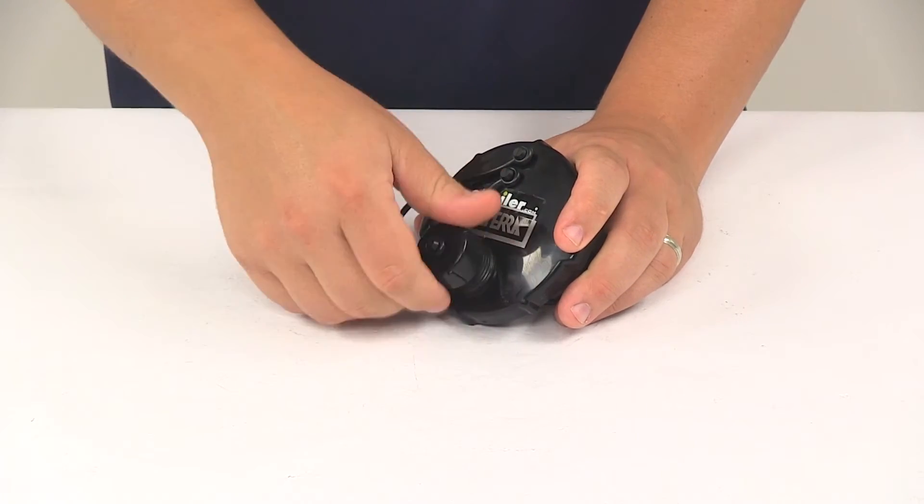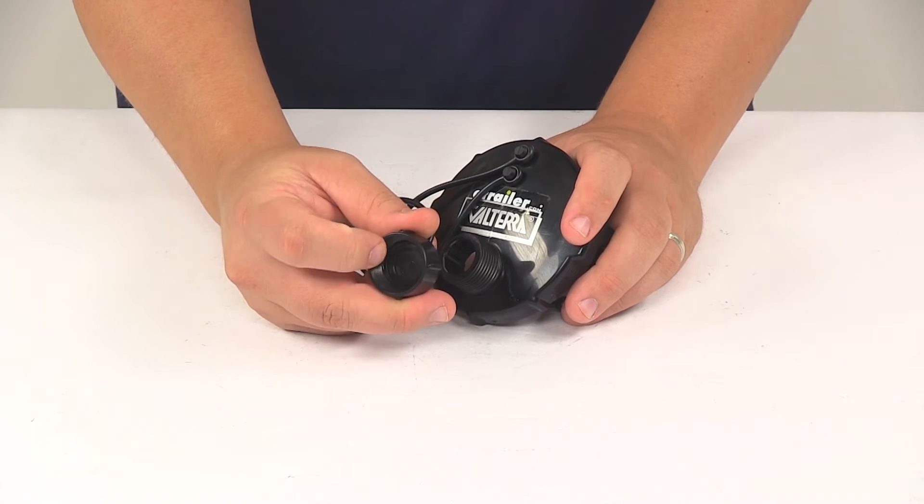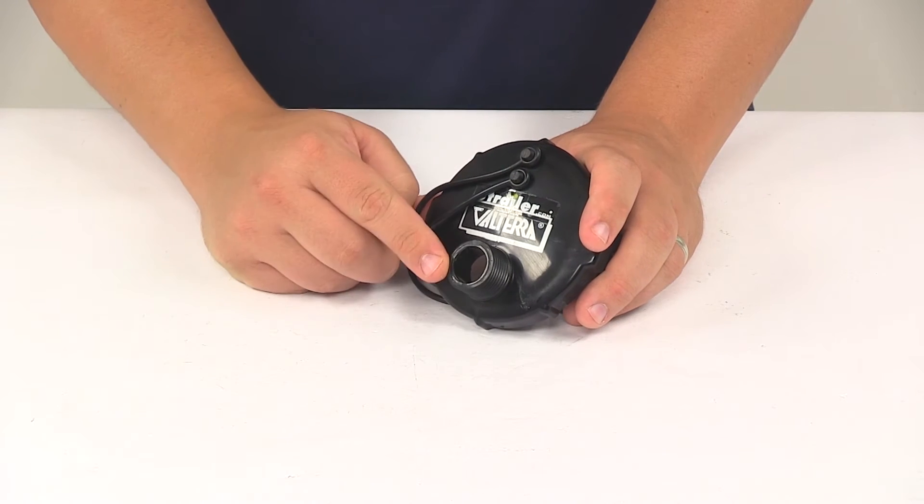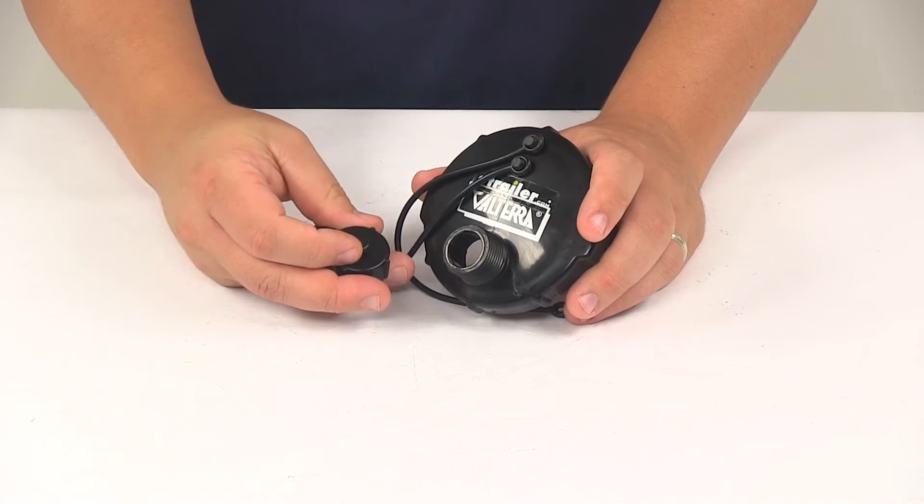This cap is just threaded so you can take it off. It has an internal seal in there again for leak-proof performance and this simply allows you to easily connect a flushing hose for off-site drainage of your gray water tank.